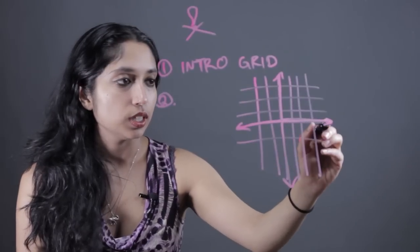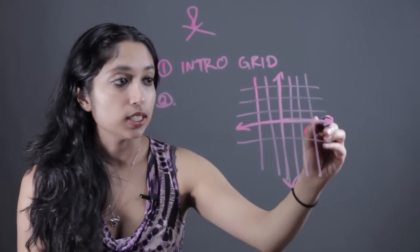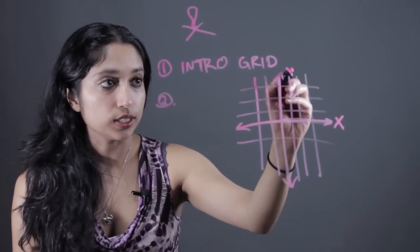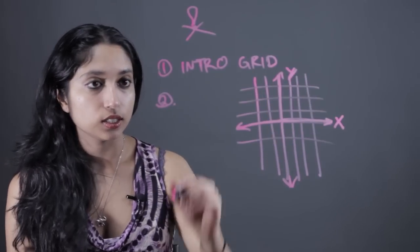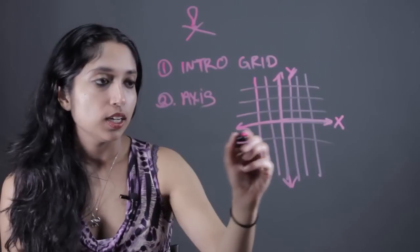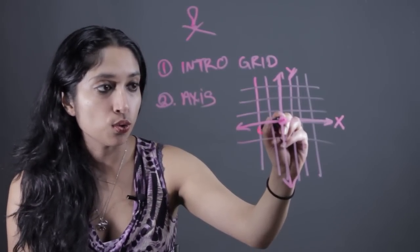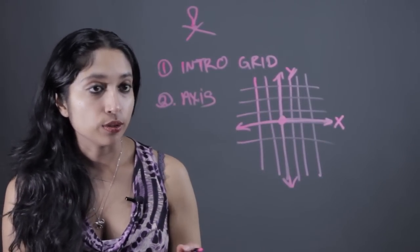You're going to tell them that the one going horizontally is the x-axis, and the one going vertically is the y-axis. So here we're introducing the axes. We're going to want to label the center point as the origin, which has a value of zero.